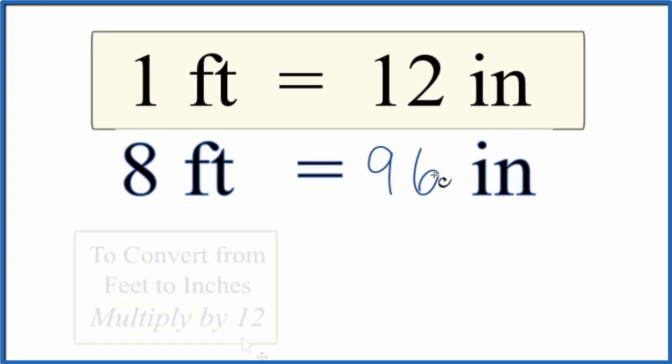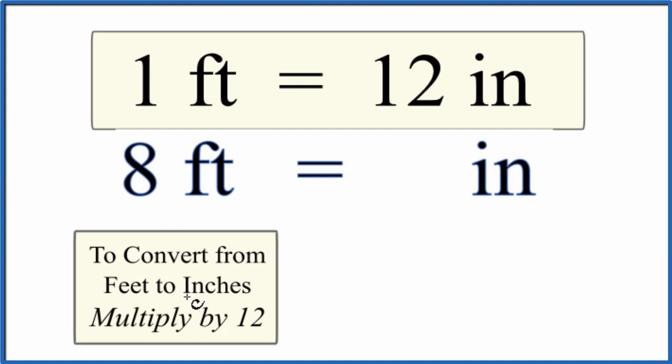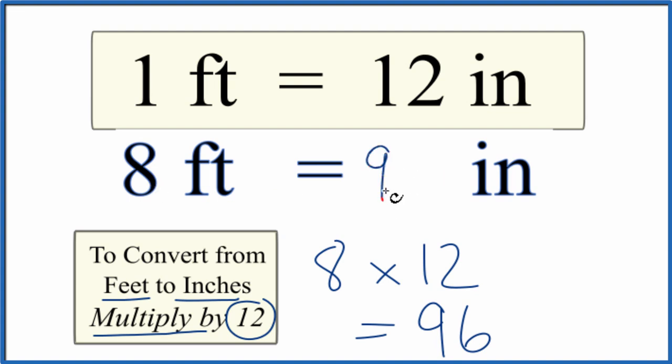Here's another way you could think of this. You could just memorize that when you go from feet to inches you multiply by 12. So you take 8 times 12. 8 times 12, that's 96. So 8 feet equals 96 inches just like we found before.